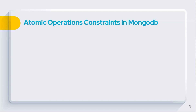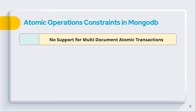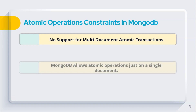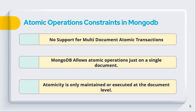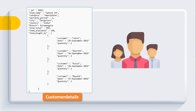There are some constraints to be aware of. For a NoSQL database like MongoDB, atomicity is not easy to achieve. MongoDB does not support multi-document atomic transactions. So if you want to maintain atomicity across multiple documents, it is not feasible. MongoDB allows atomic operations only on a single document. Atomicity is maintained at the document level — unlike SQL which achieves atomicity at the table level. Here in MongoDB, it is achieved only at the document level, not at the whole collection level.